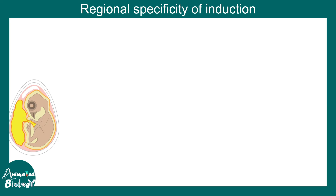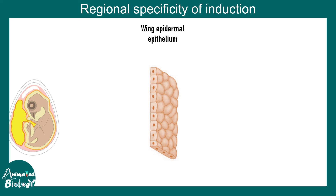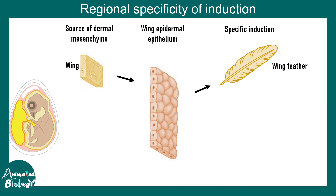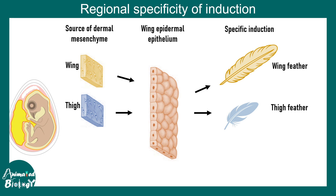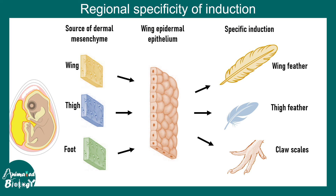There is also regional specificity of fate induction, demonstrated beautifully in chicks. The chick skin has two layers: the epidermal epithelium and the dermal mesenchyme. When wing dermal mesenchyme was placed under wing epidermal epithelium, wing feathers formed. When thigh mesenchyme was used, thigh feathers formed. When foot mesenchyme was used, claw scales were produced instead of feathers. This shows that positional information is encoded in the tissue and induction has regional specificity.